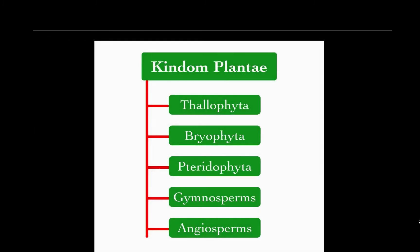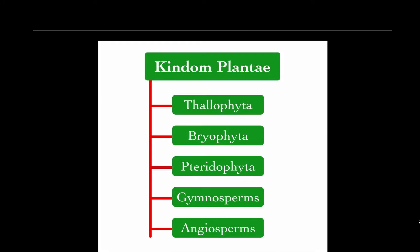What is Kingdom Plantae? The word Plantae is a taxonomic group that includes land plants and green algae. Kingdom Plantae includes multicellular, mostly autotrophic eukaryotes that usually conduct photosynthesis. Kingdom Plantae is classified into five subgroups based on three criteria.